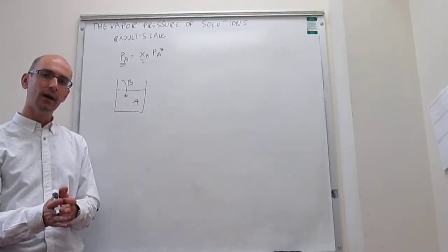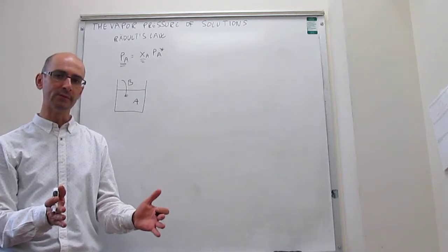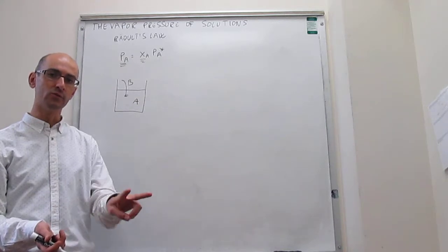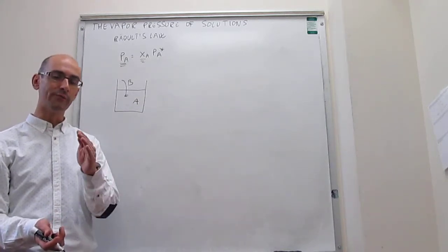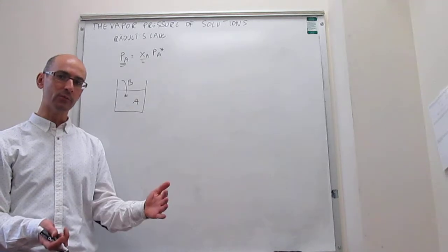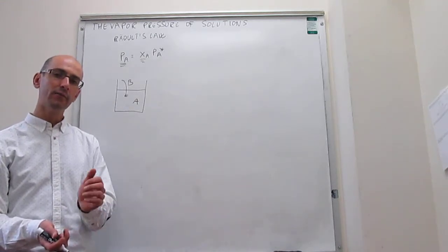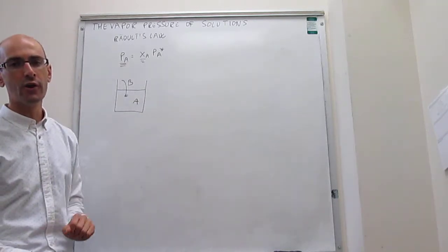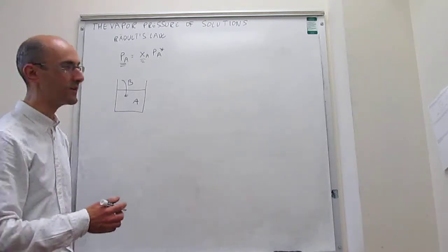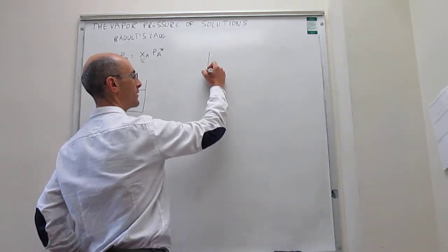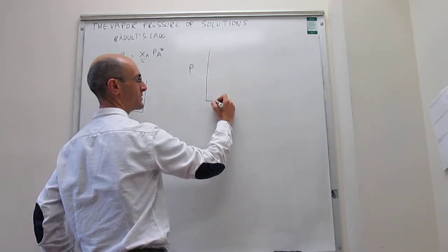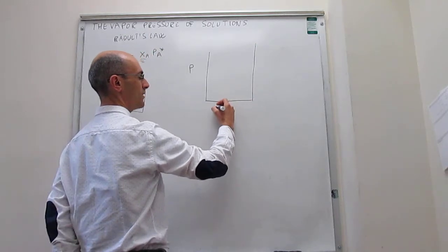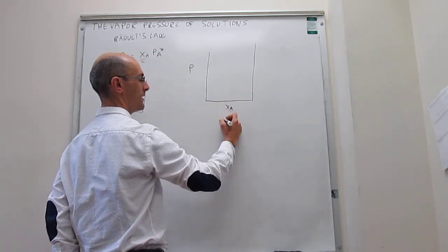Now, this law applies to the entire range of possible concentrations. The range of possible concentrations for a binary mixture of just two substances A and B would be to go from no A to 100% A, and from 100% B to no B. We're going to plot here the vapor pressure of those liquids A and B as a function of the concentration or the mole fraction of A and B.